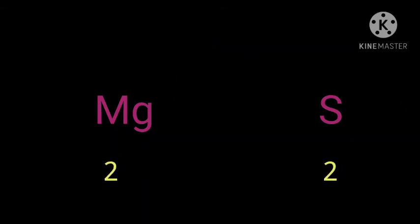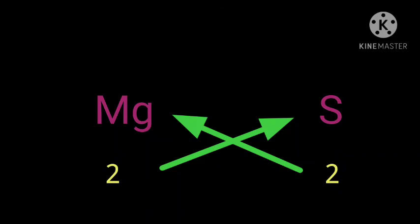Third, now we will crisscross over the valencies of both the elements and write them as subscripts. That is, Mg2, S2.